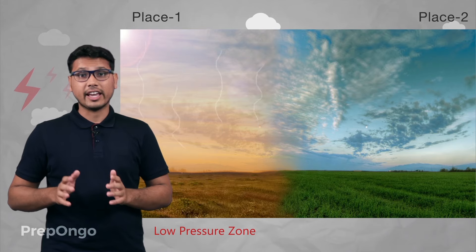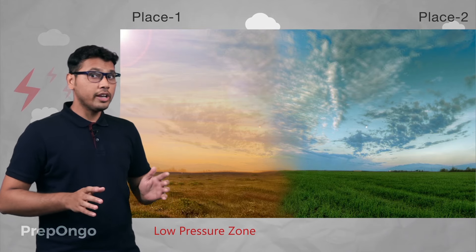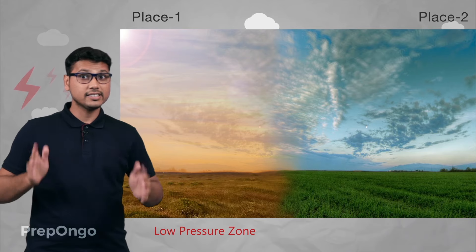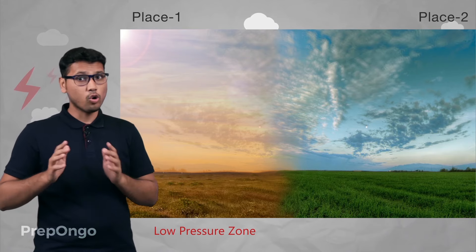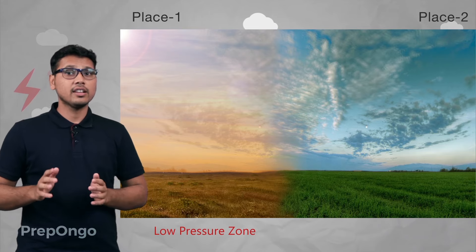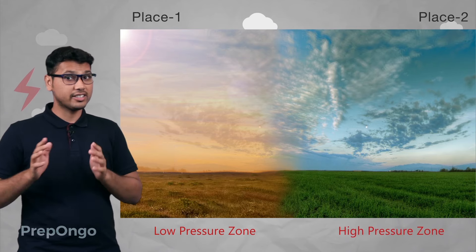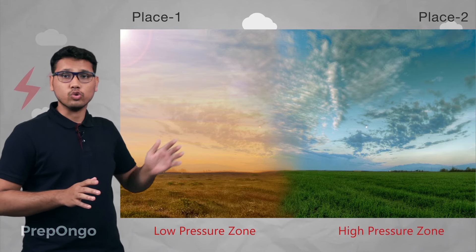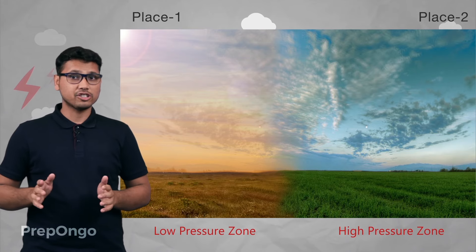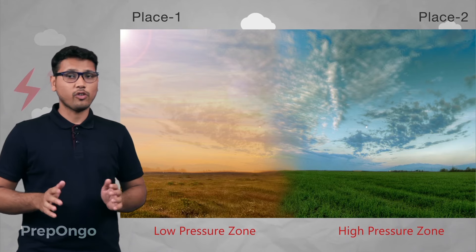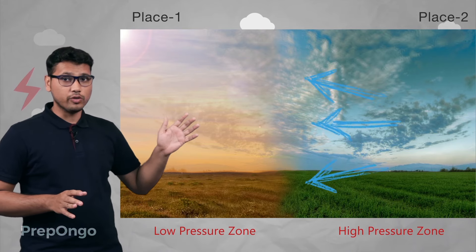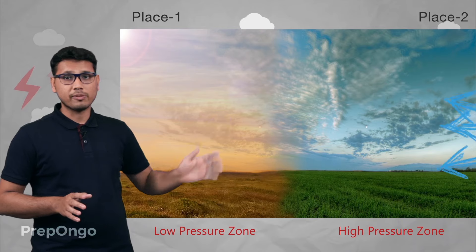Hence, a low pressure zone will be created in area 1. Now if you look at area 2, it is not receiving any sunlight, so the air around that area will be colder in nature. Since the air around area 2 is colder, it will stay on the ground, and hence a high pressure zone will be created in area 2. Air always flows from a high pressure zone to a low pressure zone.